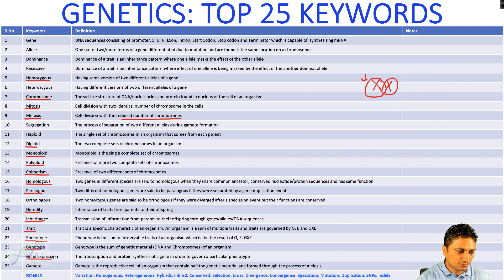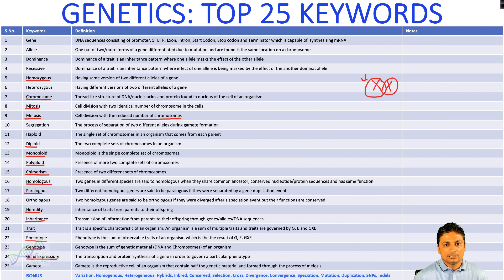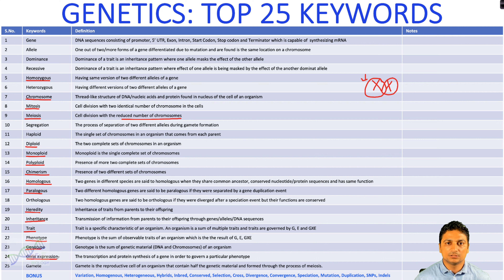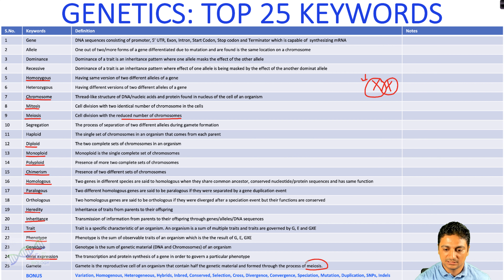The twenty-fourth keyword is gene expression. Gene expression means a gene will express into a transcript, and from that transcript it will make a protein, and finally it will show a phenotype. The twenty-fifth keyword is gamete — the reproductive cell. During gamete formation, two different alleles are separated, and this happens during meiosis cell division, which is also called reductional cell division.